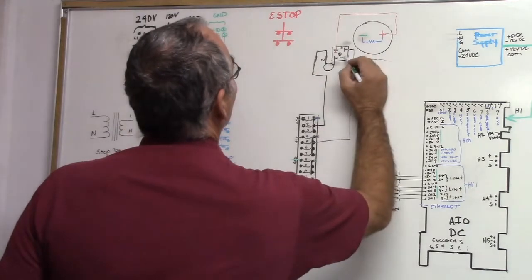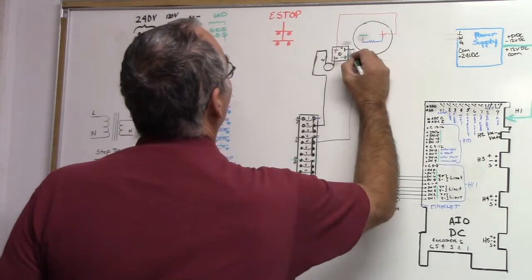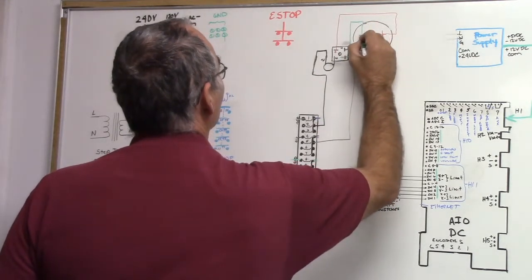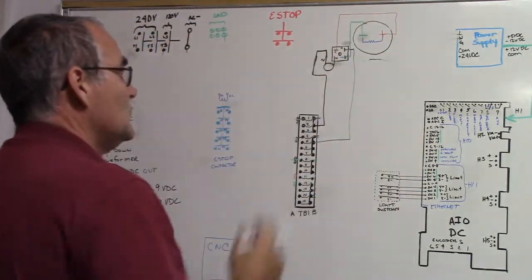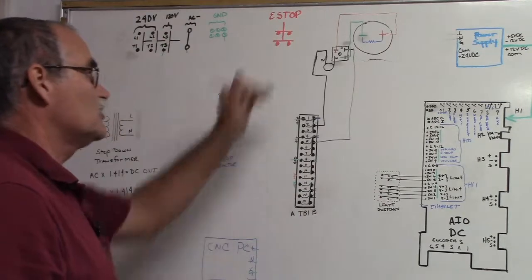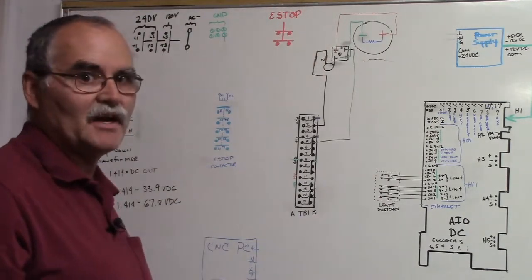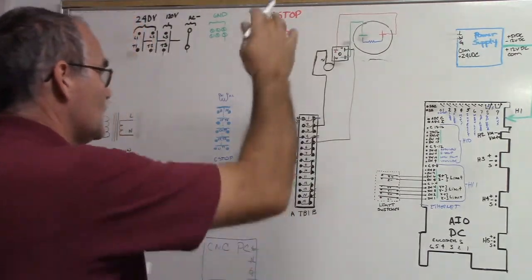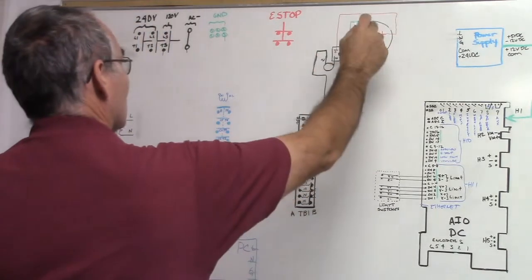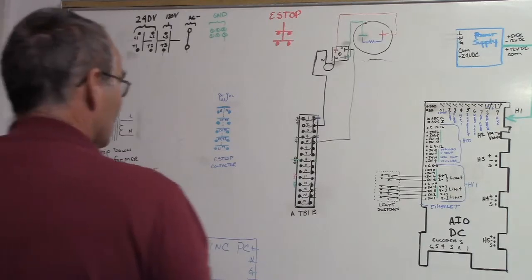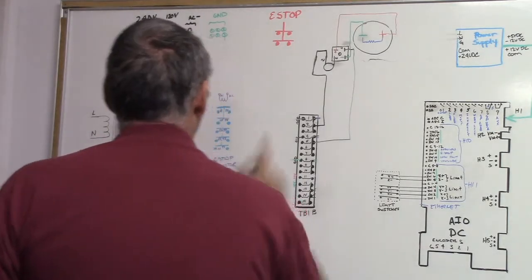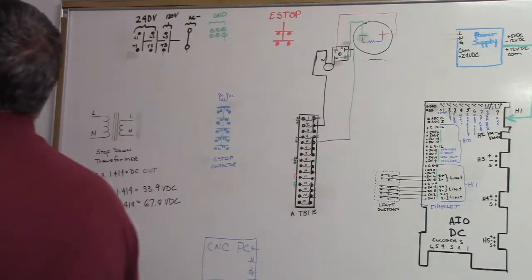And then off of our negative terminal, we go to our minus. So now our capacitor is connected and the capacitor can filter this choppy, nasty DC coming out of the bridge rectifier and clean it up. So that's where we're at now. Now we've got to get it out of here and end up to our H2 VM minus and VM plus. And to do that, we're going to go through our e-stop contactor first.